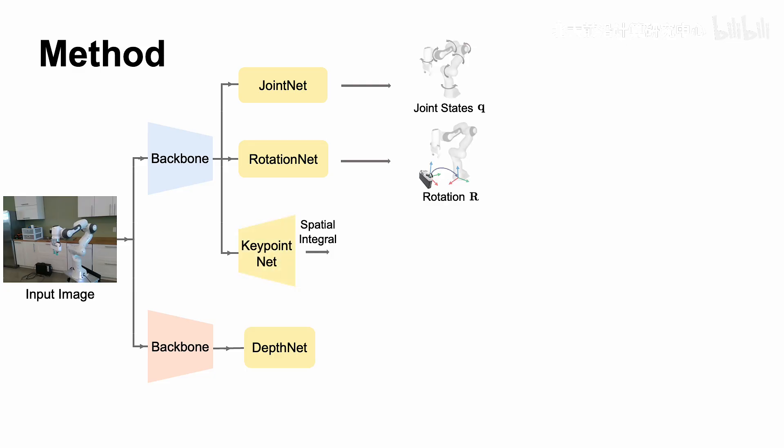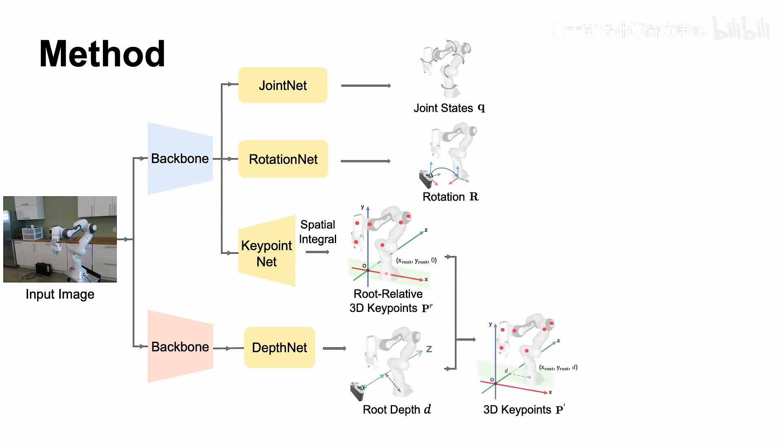KeypointNet's output is the root-relative 3D keypoint locations, which, in conjunction with DepthNet's estimation of the absolute root depth, provide a whole set of 3D absolute keypoint locations, including the camera-to-robot translation. The estimated joint state parameters, along with the camera-to-robot rotation and translation, are then used to perform forward kinematics, yielding the final 3D keypoint estimations.